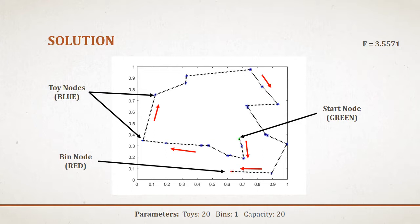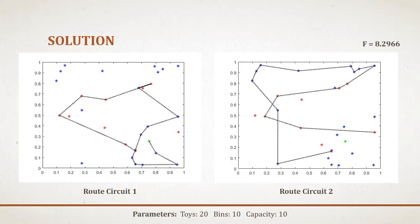Here's an idea of what that looks like graphically. This first one is very similar to an open traveling salesman problem, where the carrying capacity is equal to the number of toys. This solution is where the carrying capacity is half the number of toys, resulting in two circuits. I have each of the pickup and delivery circuits broken out so as to not be confusing.